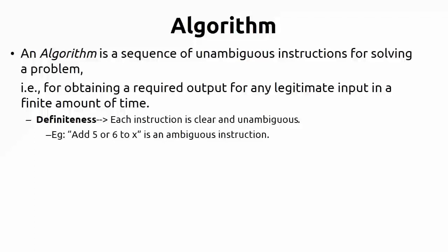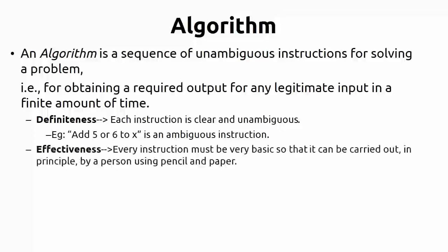Let me explain definiteness with an example. If I say 'add 5 to X,' this is unambiguous — the computer will add 5 to X. But if I say 'add 5 or 6 to X,' the computer is in a dilemma: either 5 or 6 can be added to X. Instructions must not be like this. This ambiguity must not exist in your algorithm. That is the property of definiteness.